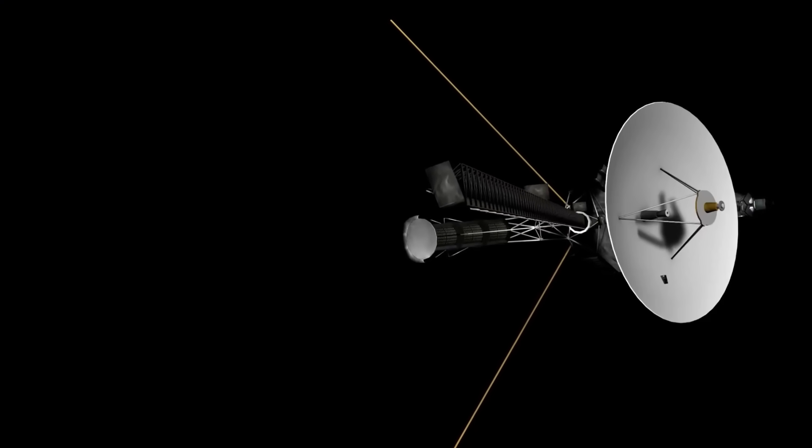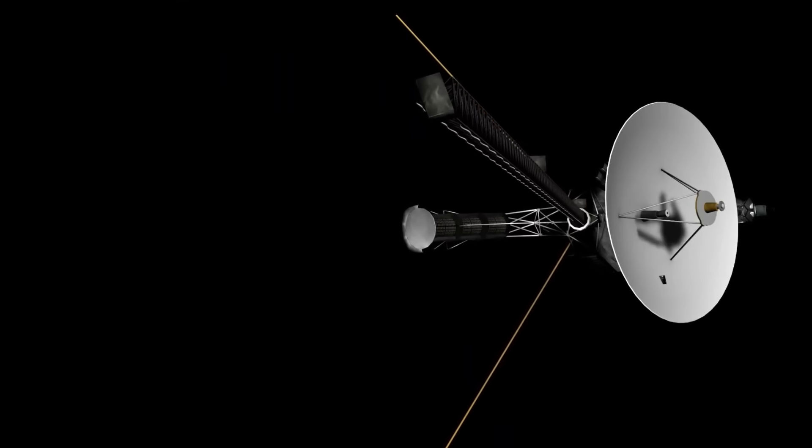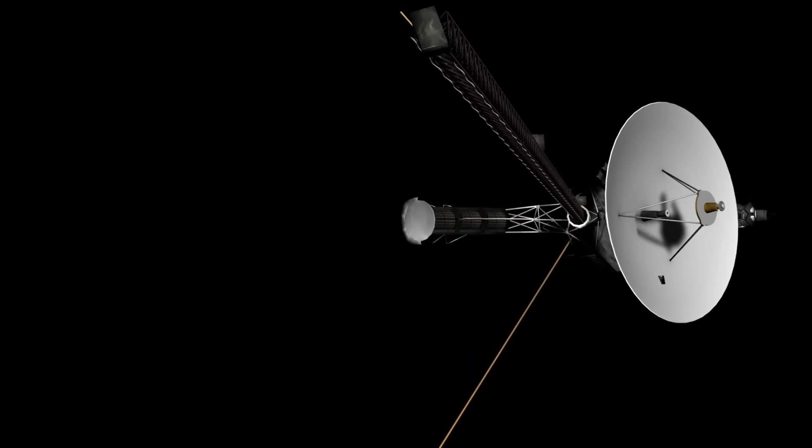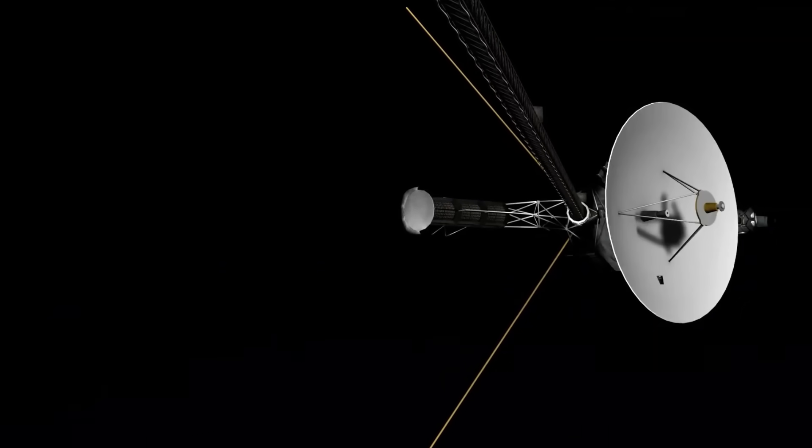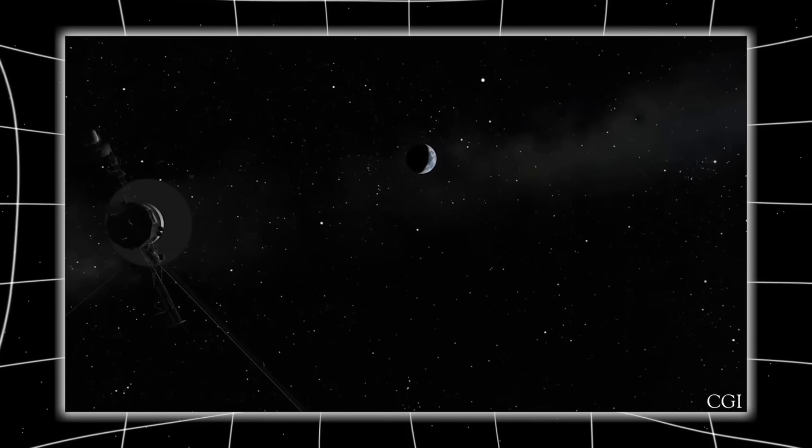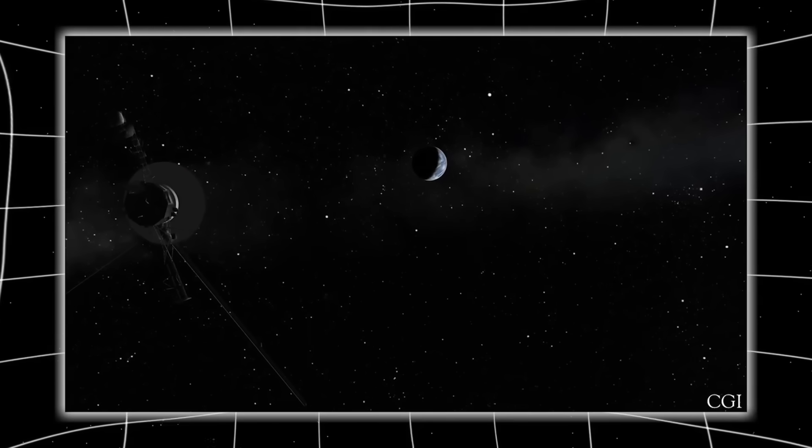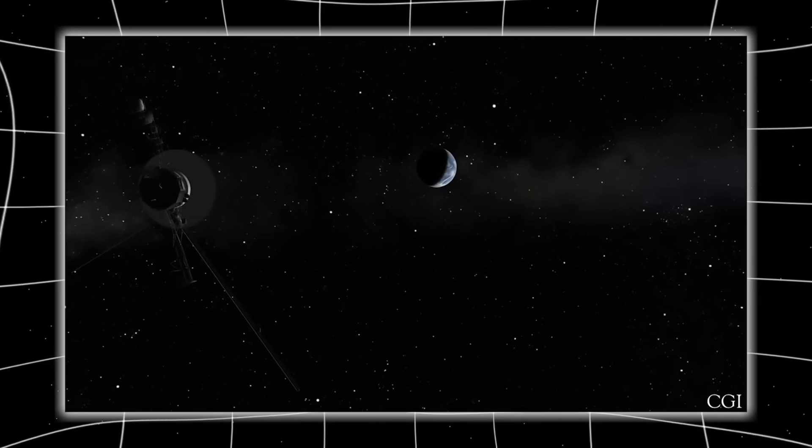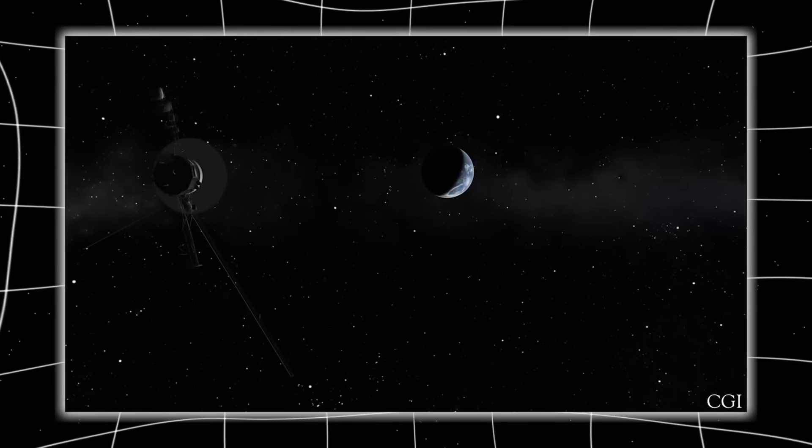Voyager 2 wasn't supposed to survive this long. It wasn't meant to send back revelations that would shake our understanding of the cosmos. And yet, here we are. Decades after its launch, drifting through the cold silence of space, it has pierced a boundary that was never meant to be crossed so easily. And what it found wasn't the peaceful emptiness we once imagined. It found change. It found pressure. It found structure.